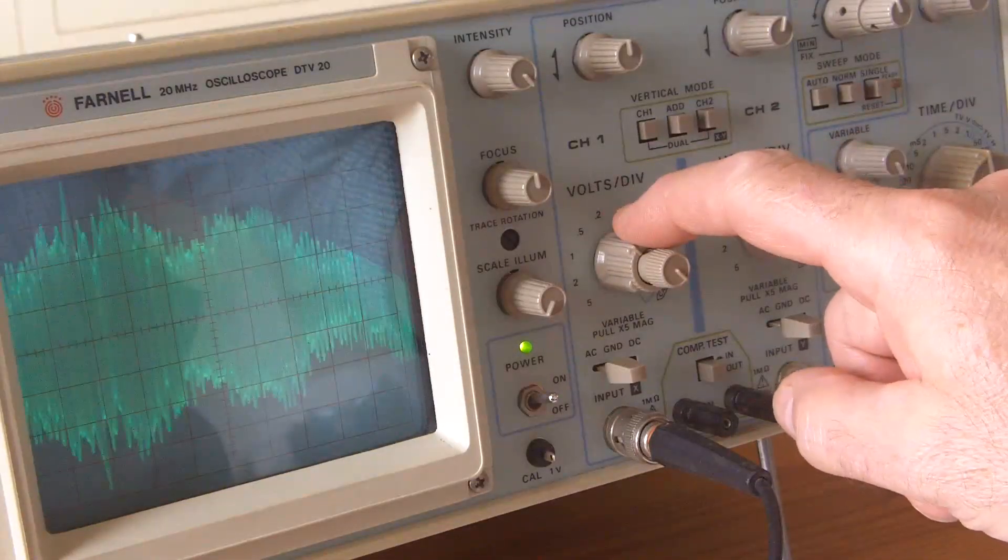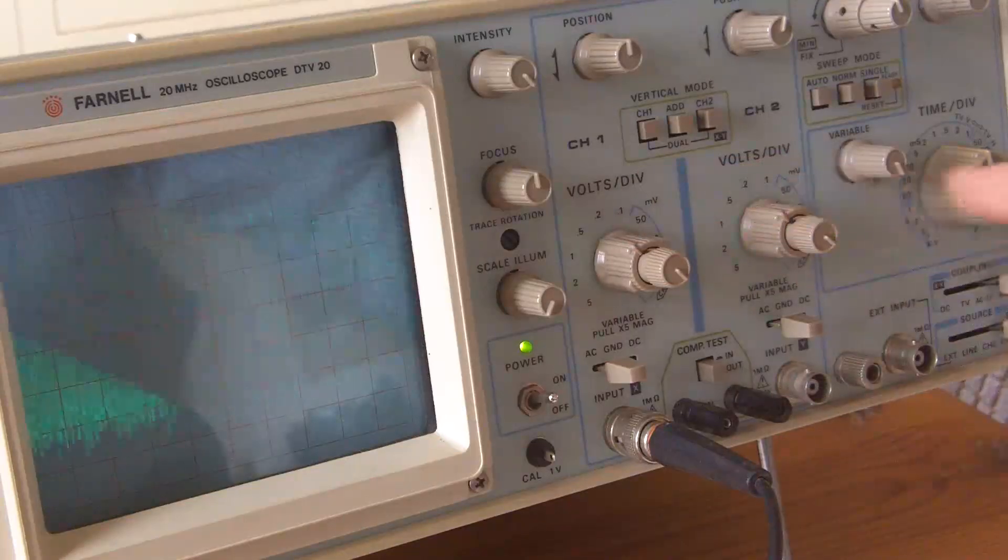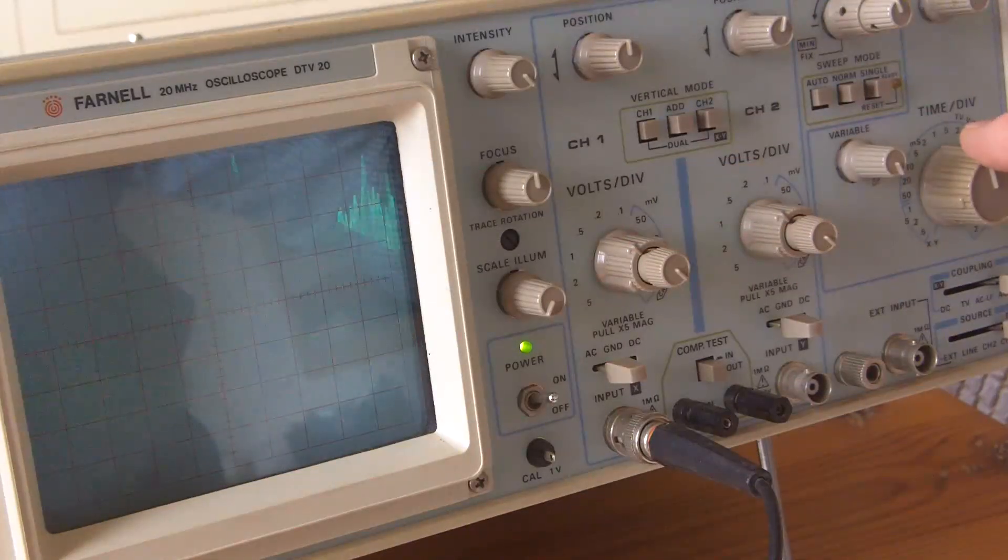To me the scope trace looks perfectly normal, but once it's videoed we get these stripes.